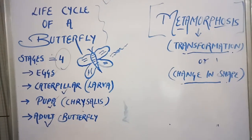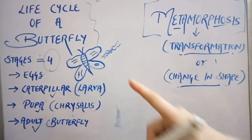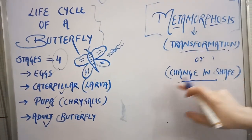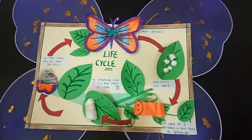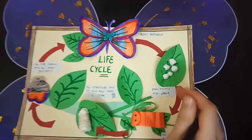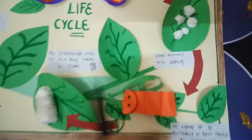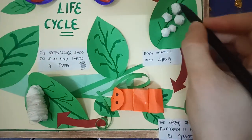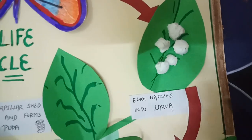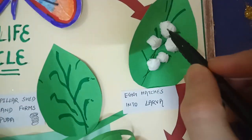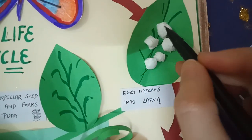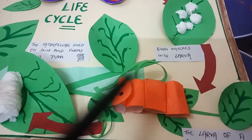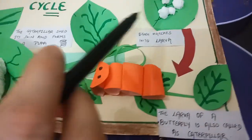Animals like frogs and butterflies undergo metamorphosis. Both butterfly and frog go through the metamorphosis process, which is known as transformation or change in shape. It all starts when a female butterfly lays her eggs on the leaves or stems of a plant. Eggs can be of various shapes and colors according to the species of butterfly, and all eggs are surrounded by a protective hard shell.